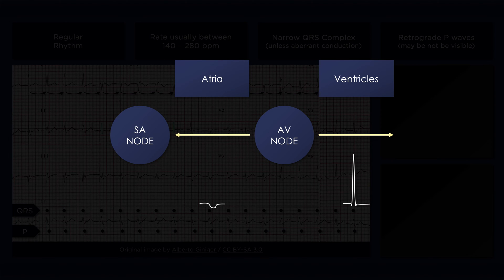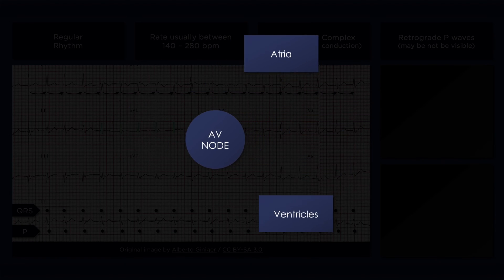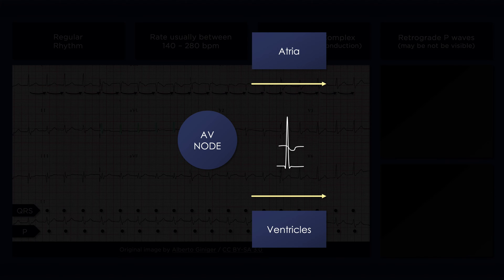In AVNRT, the electrical impulse starts in the AV node and then spreads out to the atria and ventricles almost simultaneously. Retrograde conduction through the atria can result in an inverted P wave in leads with predominantly positive QRS complexes. Simultaneous activation of the upper and lower chambers of the heart is reflected on the ECG by overlapping P waves and QRS complexes.